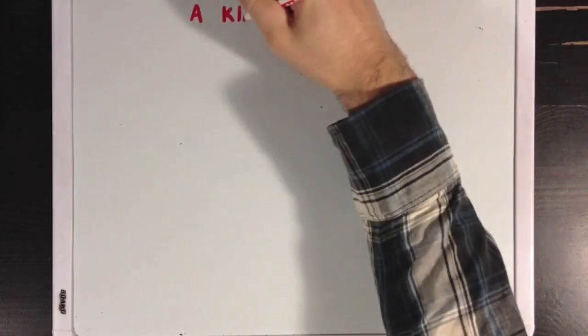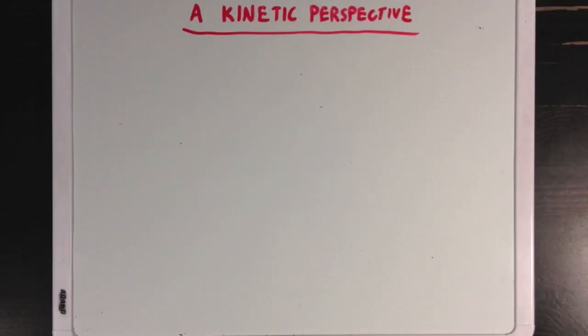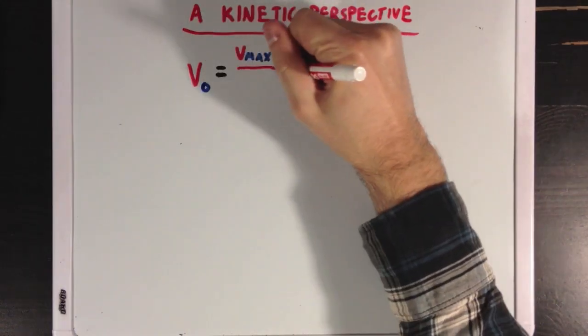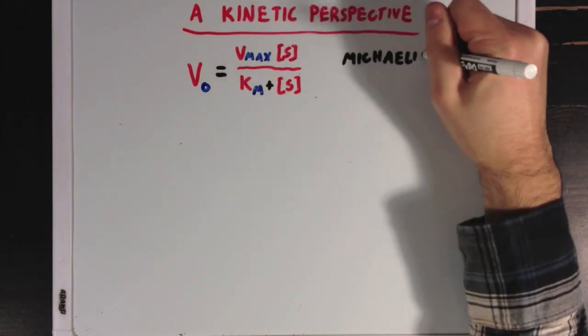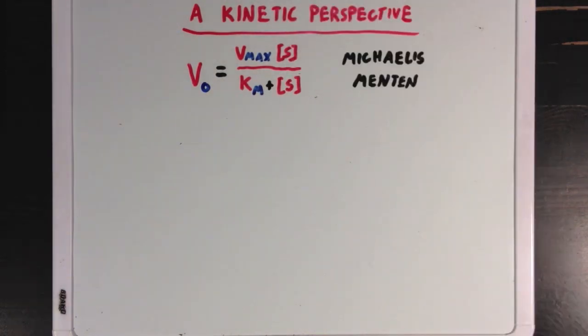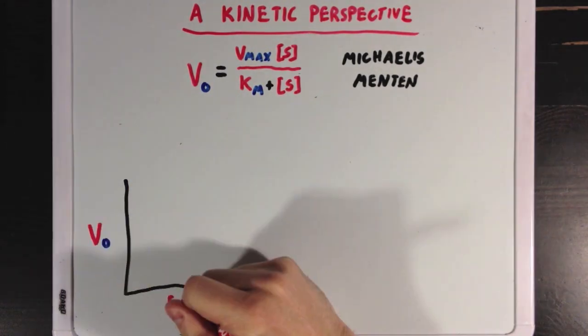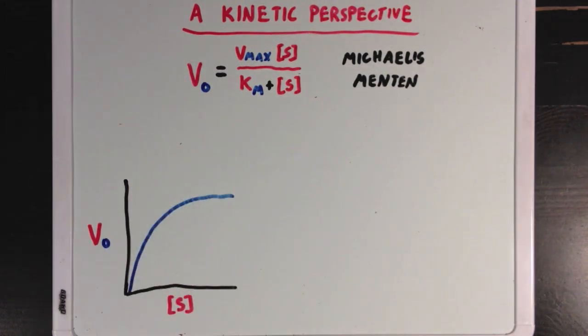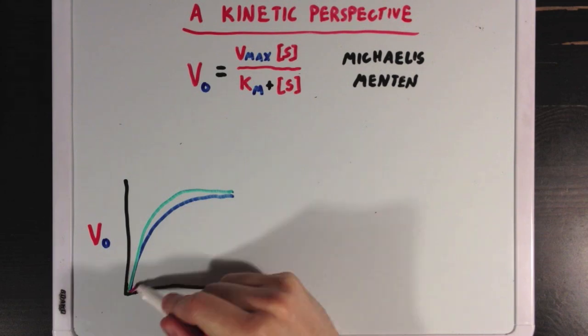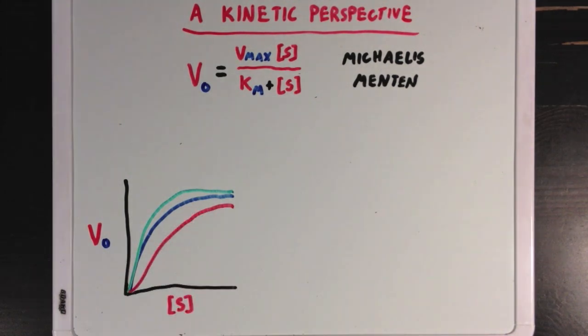So, let's take a look at what we mean by increasing and decreasing enzymatic activity from a kinetic perspective. So, remember the Michaelis-Menten equation. And if we're assuming substrate concentration to be constant, then there are two ways to influence enzymatic activity, or VO. And in this first graph, I've drawn three different curves, and the blue curve represents the enzyme functioning without an allosteric regulator at all.